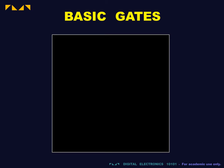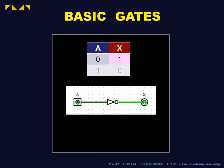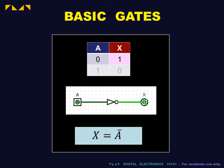For each gate, we will present the truth table, which describes the function of the gate, the logic symbol along with inputs and outputs, and the Boolean expression.